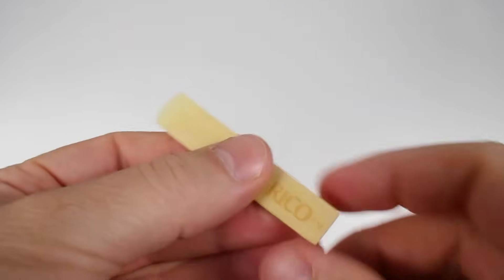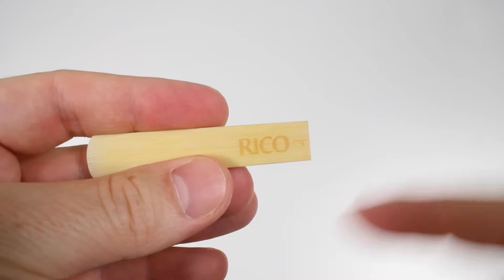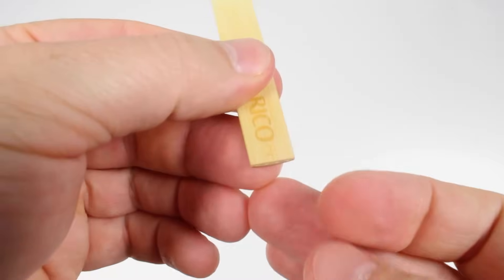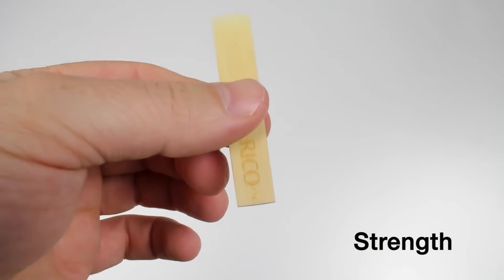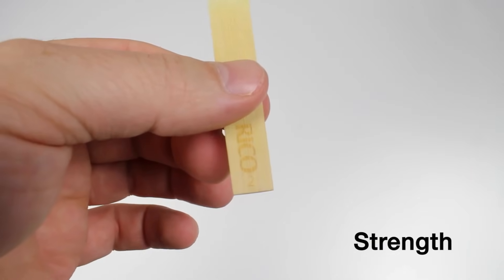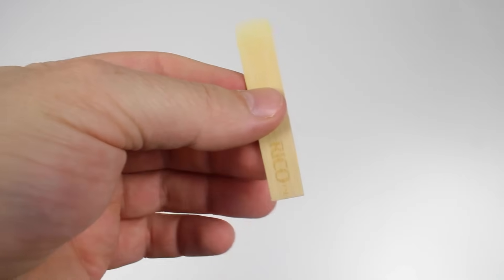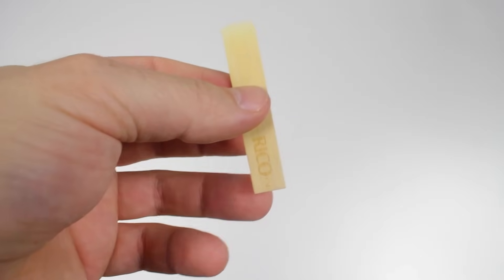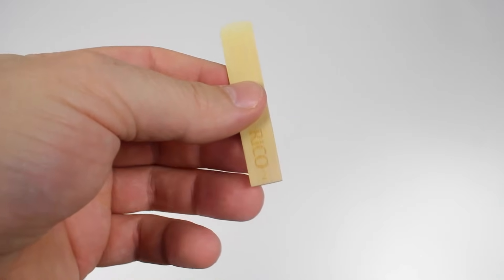Turn your reed over and look at the back. You'll see the name of the company that made your reed. This is a Ricoh reed. And you'll also see a number printed there. Can you see that number too? This number tells you the strength or the thickness of the reed. As a beginner, your reed strength is probably going to be a 2 or a 2 1⁄2. And as you progress with your teacher's guidance, you'll probably move up to a 3 or a 3 1⁄2.